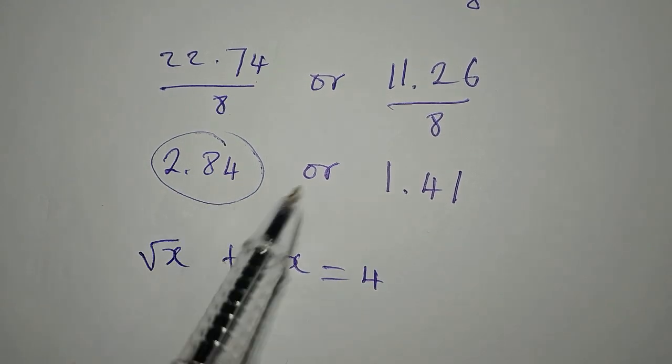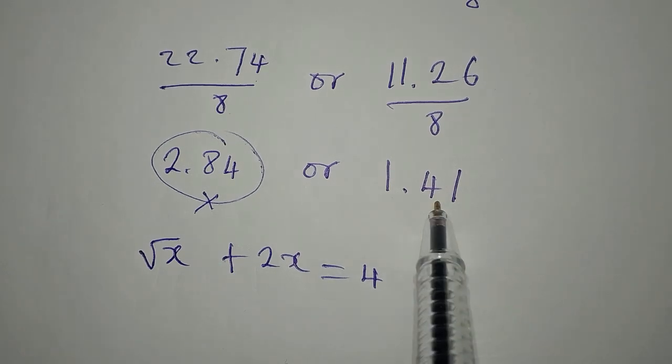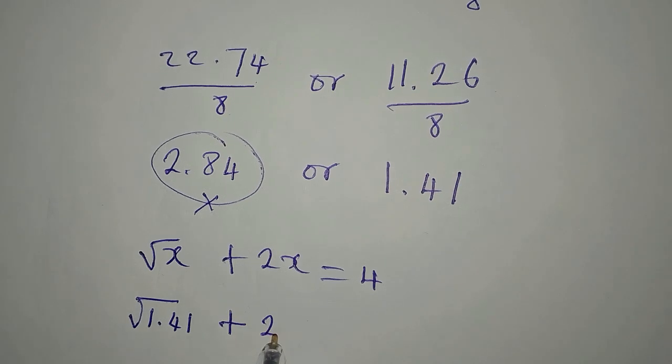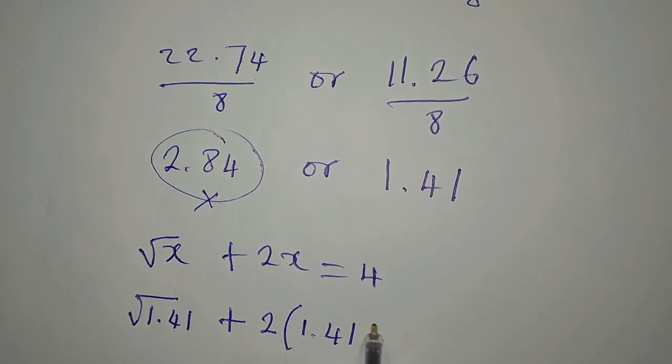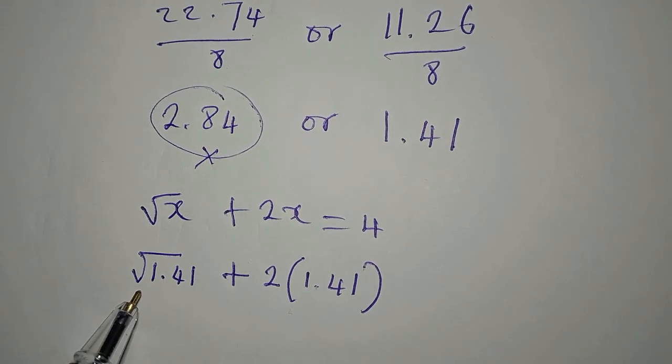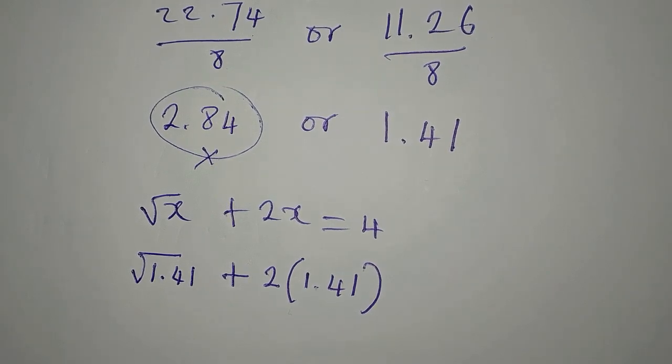But let's try this and see. We have square root of 1.41 plus 2 multiplied by 1.41. Now let's get that approximated value for the square root of 1.41. That is approximately 1.19, plus this, if you multiply this you're going to have 2.82.